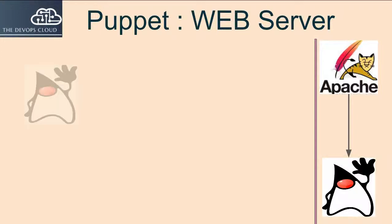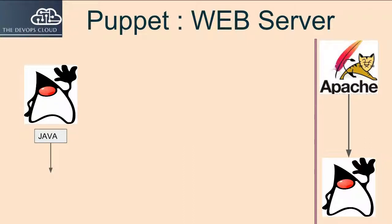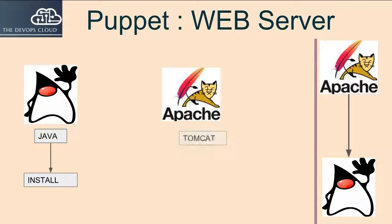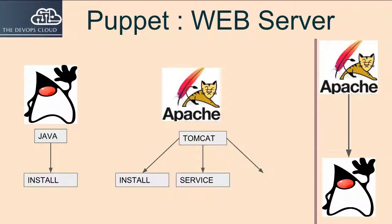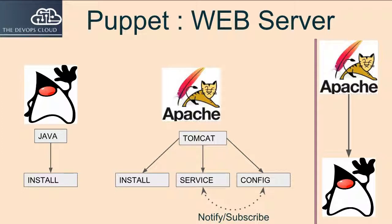Let's summarize the complete exercise before we get into the lab. First we will install the Java module through the java install.pp class. Next we will install the Tomcat package through the tomcat install.pp class. After that we will configure the service class to start the Tomcat services. Next we will configure the config class to manage the Tomcat configuration file. We will also create a resource relationship between the config file resource and service resource so that whenever there is a change in the file, the service will get refreshed via the notify resource meta-parameter.